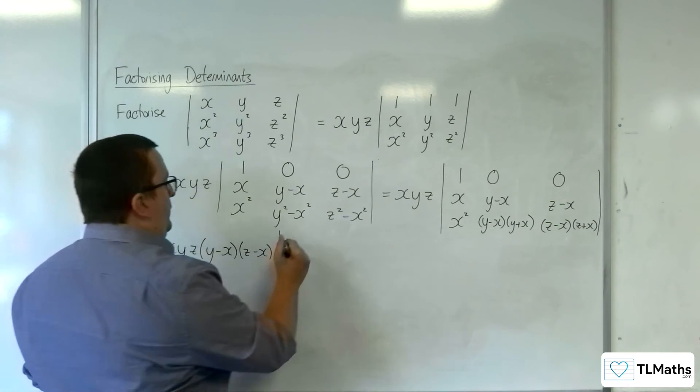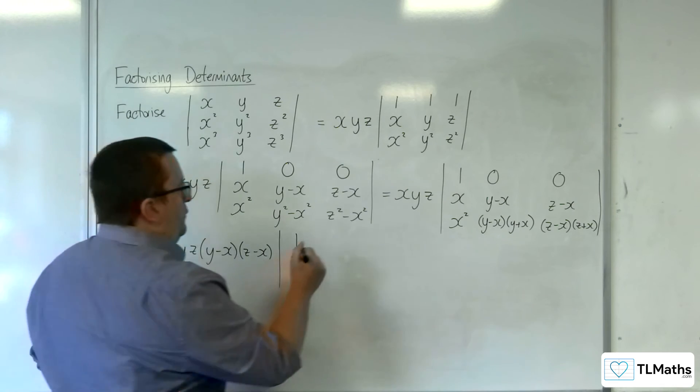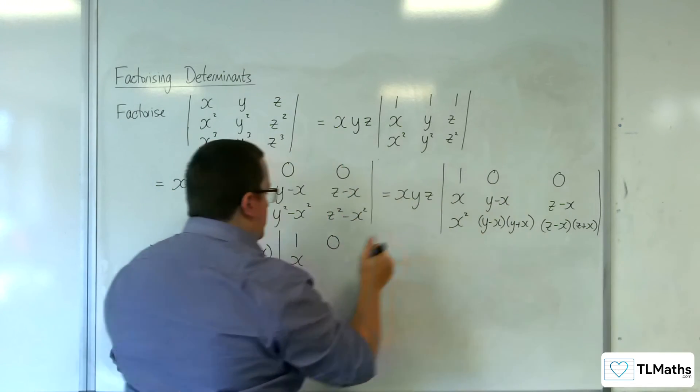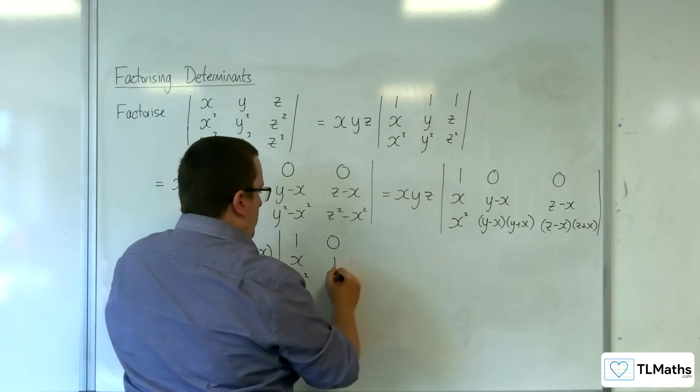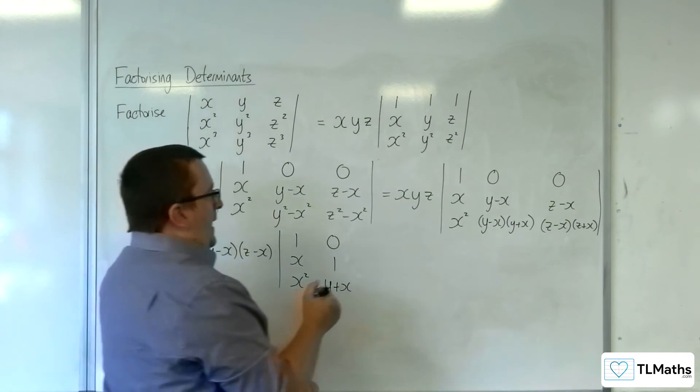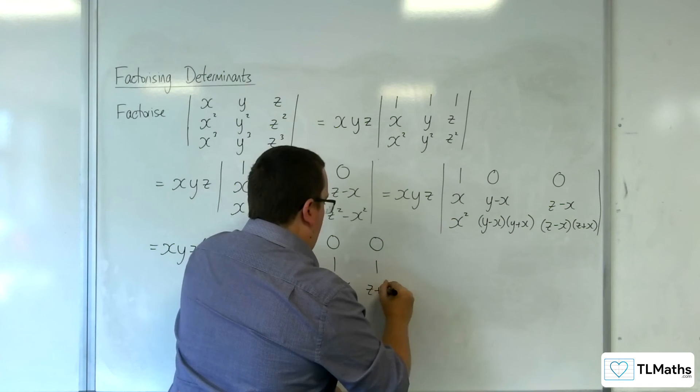Now what I've got left is I've got the 1, x, x squared. I've got 0, now because I've factored out the y minus x, I'm just going to be left with 1 and y plus x. And here I'm going to have 0, 1, and z plus x.